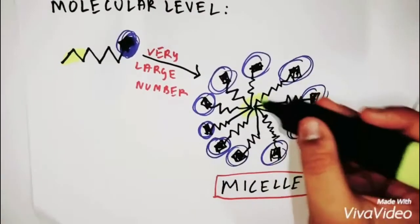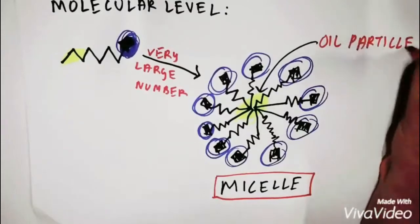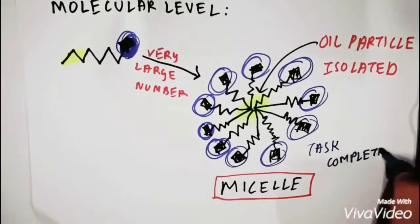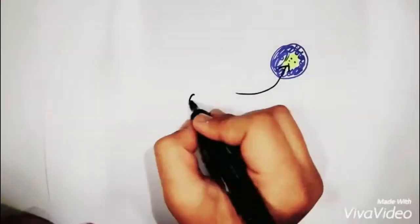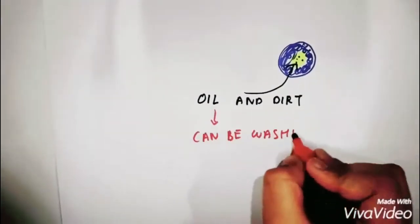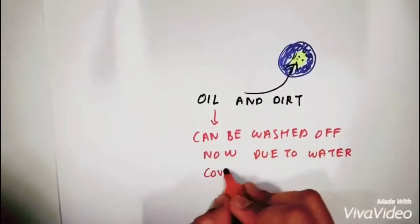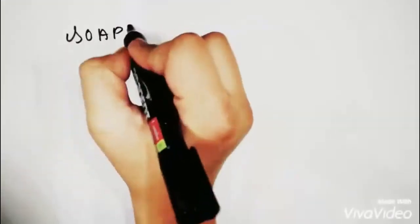The micelle has the water particles on the outside while the oil particle is isolated on the inside of the micelle. Now once the oil particle is isolated, this can be easily washed off with water because water rinses water off and not oil.